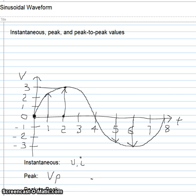The last value that we need to know is called the peak to peak value. This value is measured from the positive most peak to the negative most peak, and is represented by V, P, P.